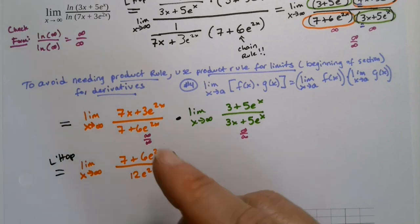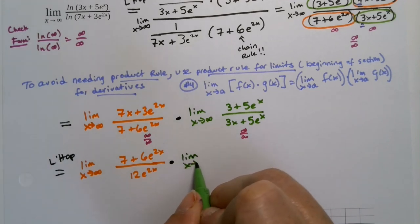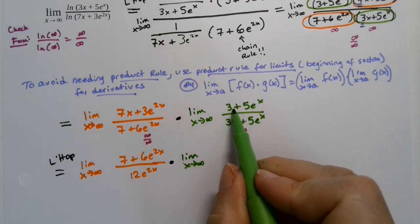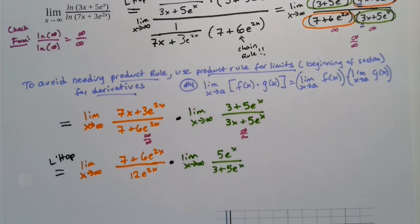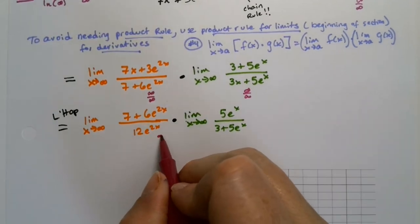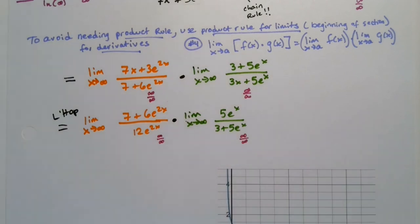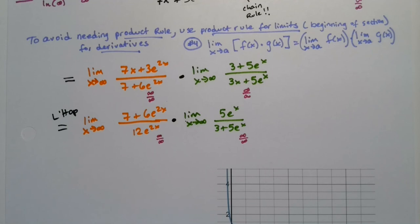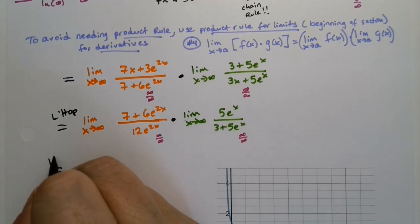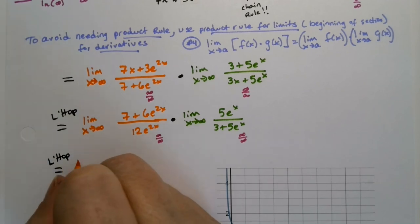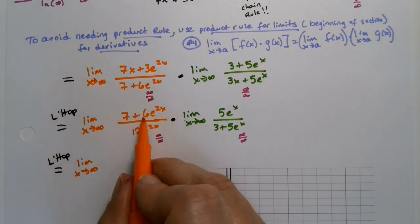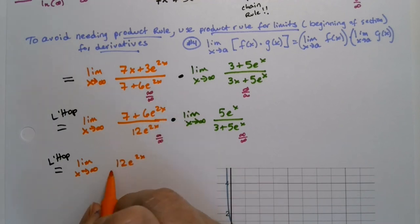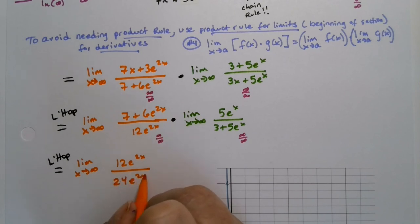Multiplied by the limit as x goes to infinity of: the derivative of 3 is zero, so that's gone, giving 5e^x over (3 + 5e^x). Unfortunately these are all still infinity over infinity, but we're getting closer. One more application of L'Hôpital's rule: the derivative of 7 is zero, the derivative of 6e^(2x) is 12e^(2x) by chain rule, and the derivative of 12e^(2x) is 24e^(2x) by chain rule — 12 times 2.